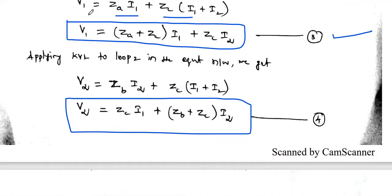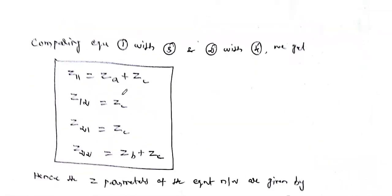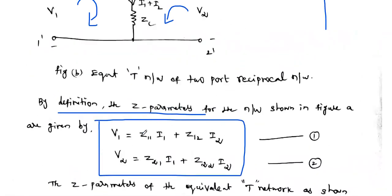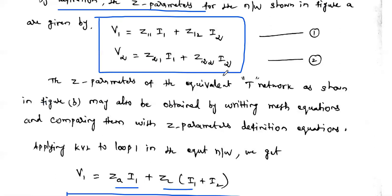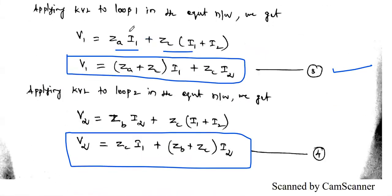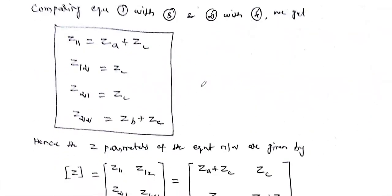From the equivalent T network, we formed two equations: V1 in terms of I1 and I2, and V2 in terms of I1 and I2. We compare these with the standard Z-parameter equations. Comparing equations 1 and 2 with equations 3 and 4, we get: ZA + ZC = Z11, ZC = Z12, ZC = Z21, and ZB + ZC = Z22.